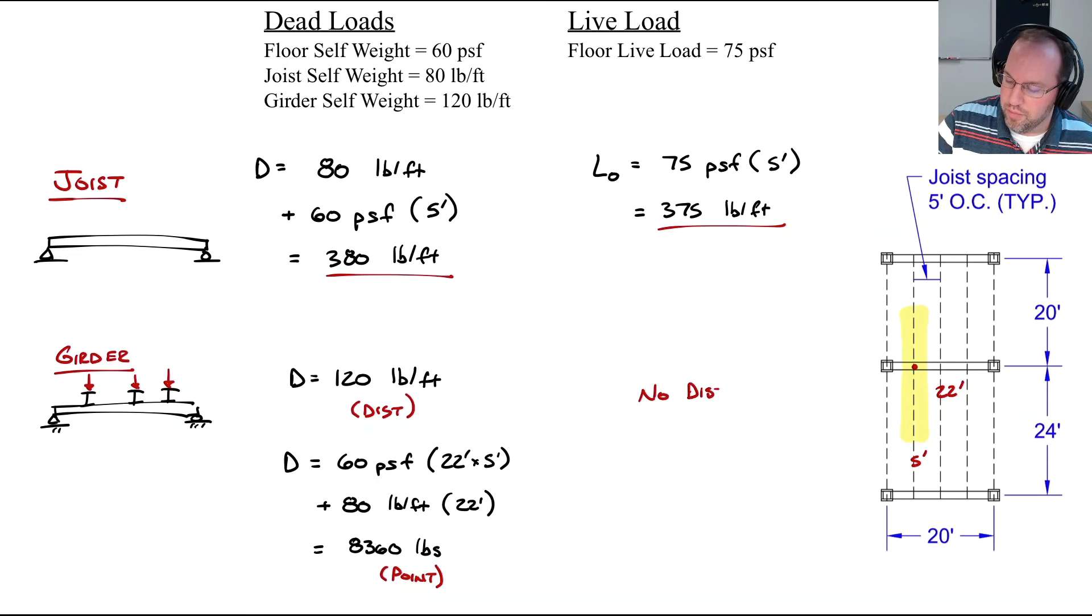For our live load there is no distributed load here, so we only need point loads. L_0 is going to be 75 pounds per square foot multiplied by the area over which it's being collected, which is 22 feet by five feet, and therefore that load is 8,250 pounds per point load.